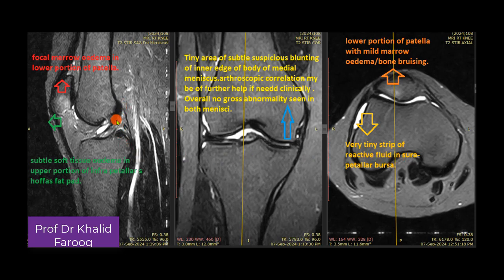Here we can see a normal anterior cruciate ligament, while the quadriceps and patellar tendons appear normal. There is a suspicious increased signal noted in the lower portion of the patella, suggesting marrow edema or bone bruising. Similar increased signals are noted in the anterior portion of the infrapatellar fat pad, suggestive of edema in this region.